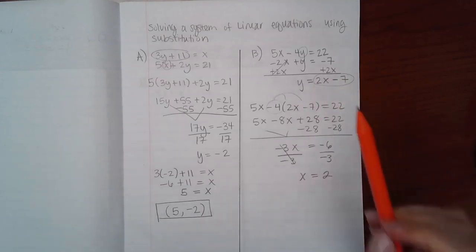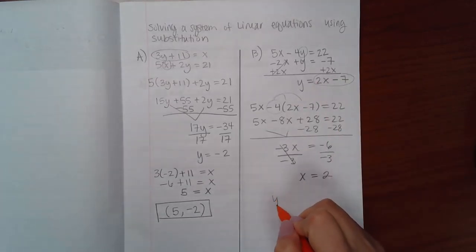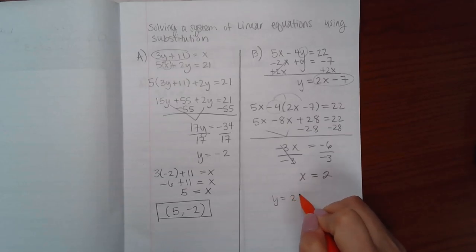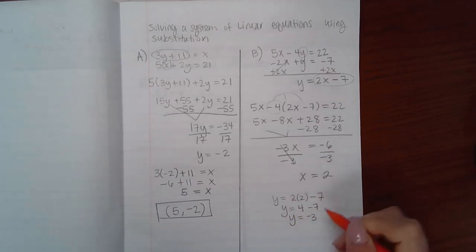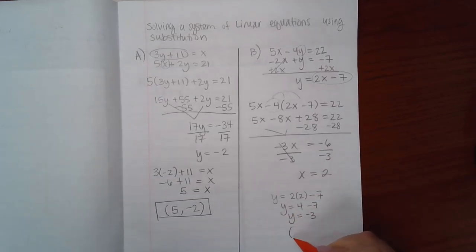Since the manipulated bottom equation will tell me y equals whatever it is, that's what I'm going to use. So I'm going to take that manipulated equation and plug in 2 for x, and I get that y equals negative 3. So my solution here is a point. 2 is the x coordinate of that point. Negative 3 is the y coordinate of that point. And that is the solution.